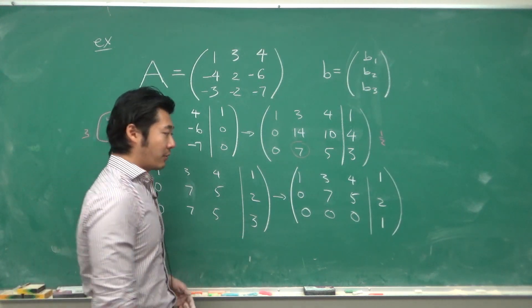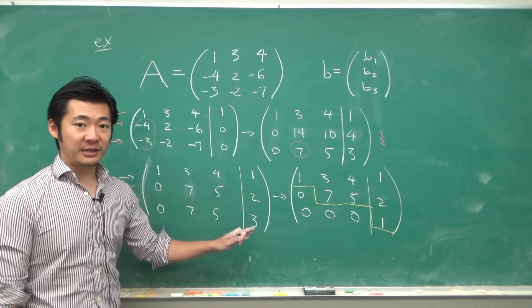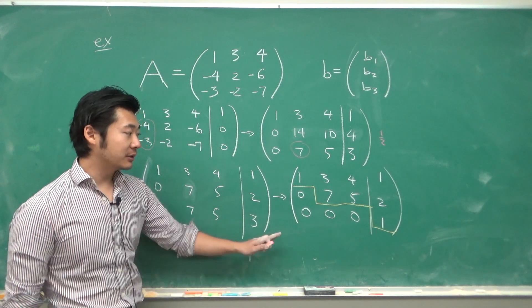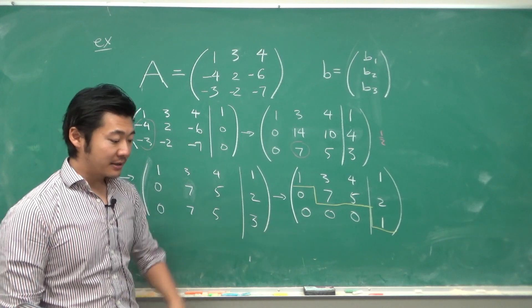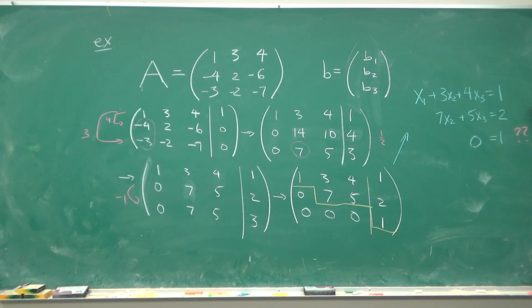And so now this is an echelon form. But here is where we see the problem. If we write out the linear equation that this augmented matrix represents, the first row will give us x1 + 3x2 + 4x3 = 1. The second row will give us 7x2 + 5x3 = 2. The last one will be 0 on this side equals 1. So when there is no solution, we say that the system is inconsistent.